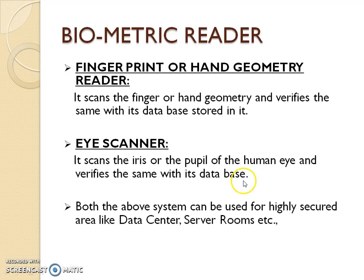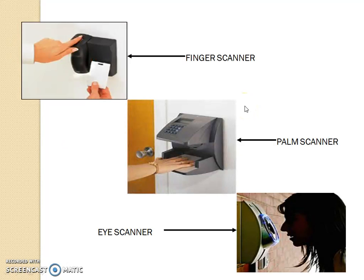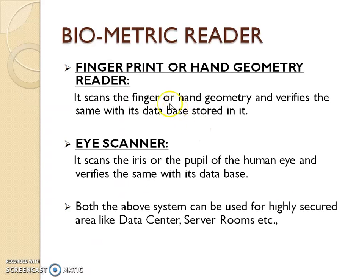In fingerprint or hand geometry readers, there are devices like a palm scanner where you have to keep your entire palm. More than this, there is an eye scanner. The eye scanner is the device which has the highest level of security. Very often you can see eye scanners installed in immigration facilities.